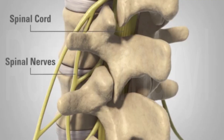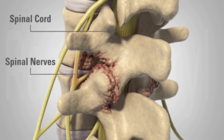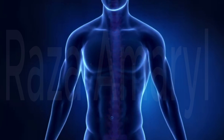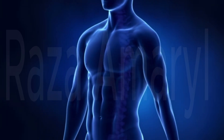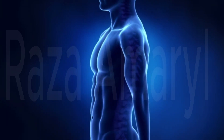2. Leg pain, also known as sciatica — this pain can be sharp, shooting, or burning in nature. It usually follows the path of the affected nerve and can extend down the back of the leg, sometimes reaching the foot or toes.